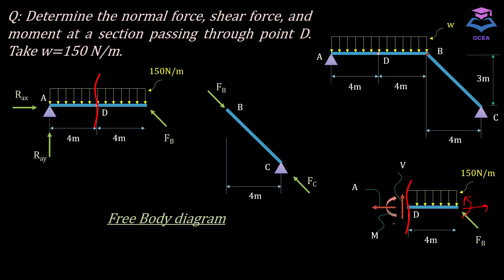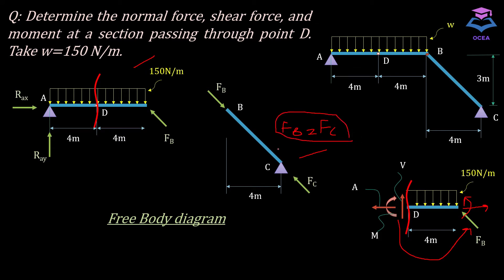To find the three internal forces we need to find the unknown FB. We could use either the BC member free body diagram or the AB member free body diagram. Analyzing member BC: it has forces FB and FC which are equal. Applying moment at point C yields no result, and applying summation of Fx or Fy only gives FB equals FC, which is not useful. So working on the BC free body diagram is redundant.